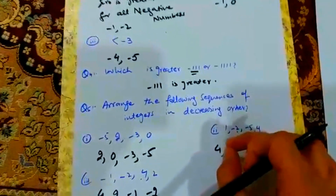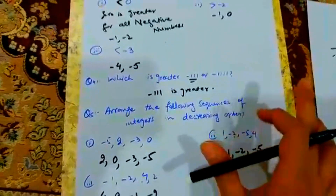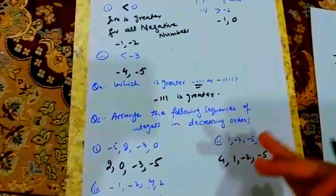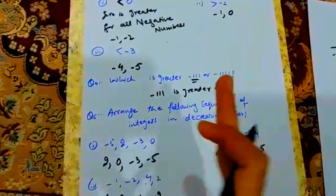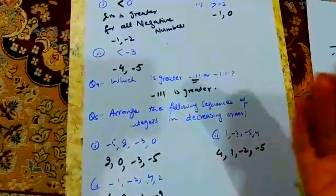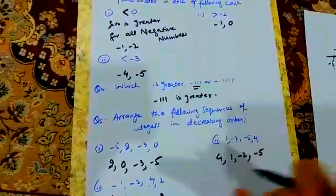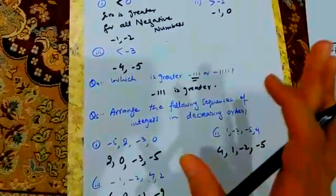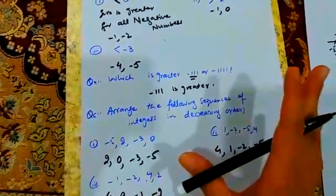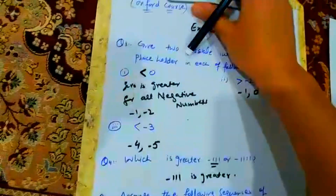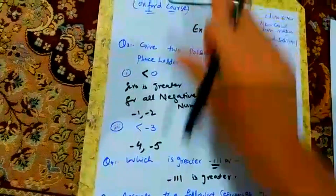This is the same method for ascending or descending order. Ascending means arranging from small to large, and descending means arranging from large to small. We use the number line the same way so you will not get confused.